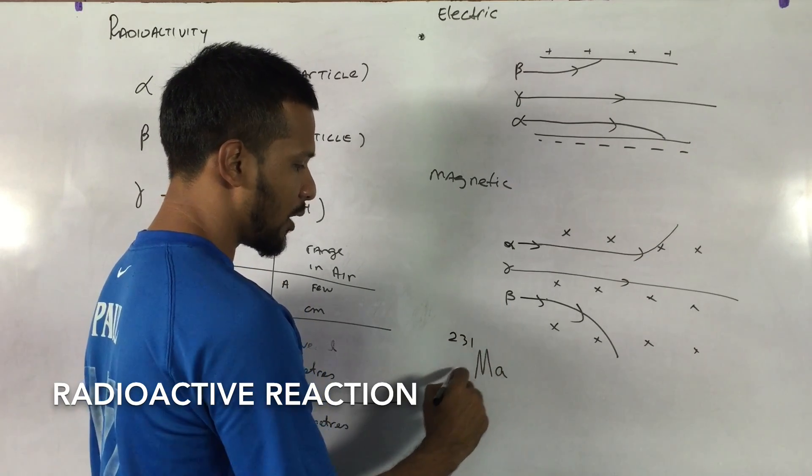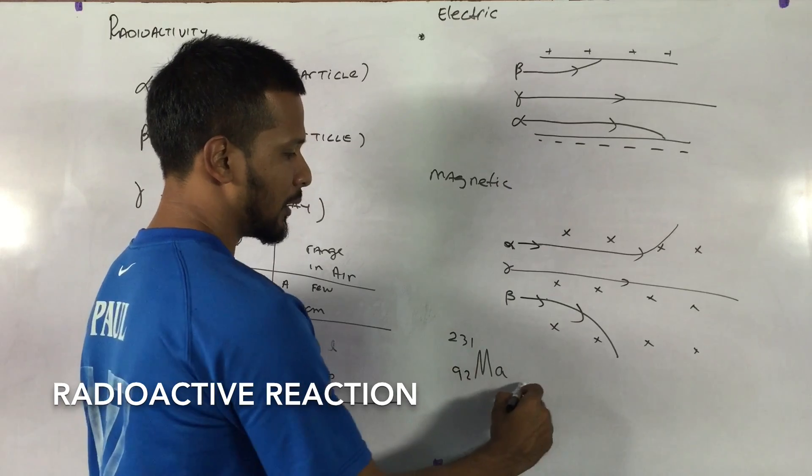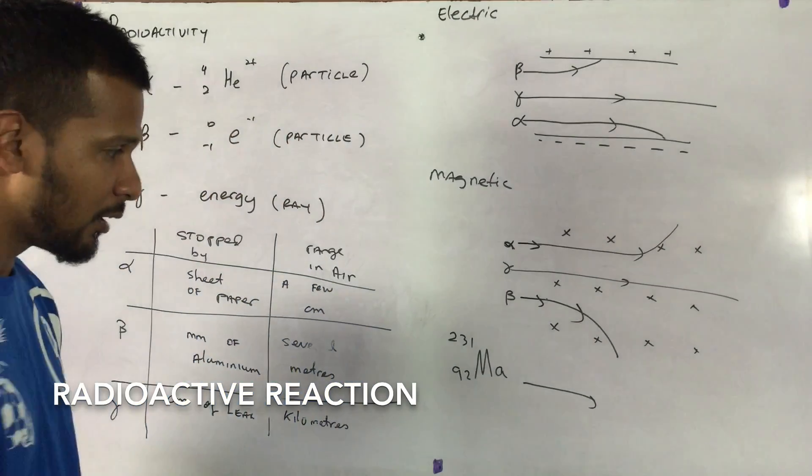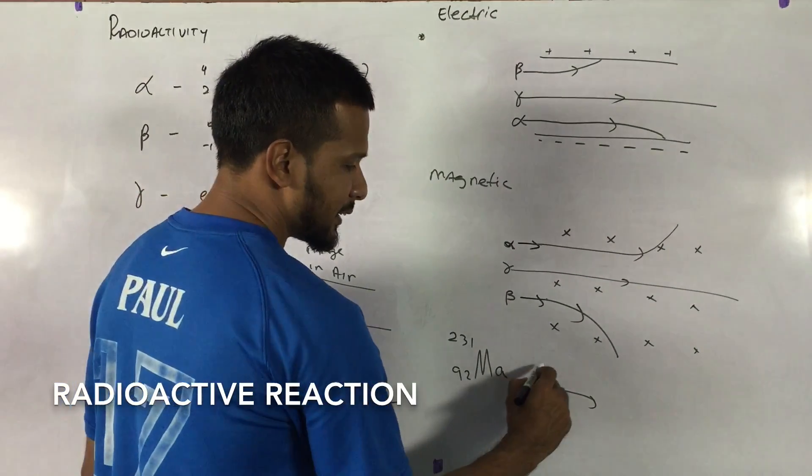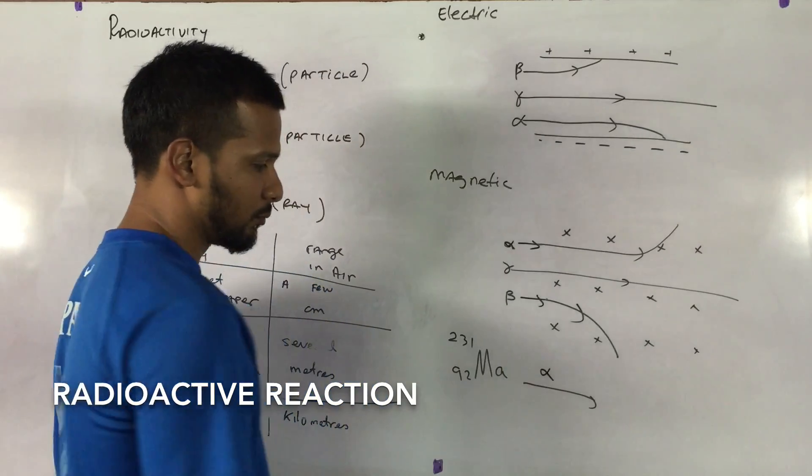Let's say this Madrid particle loses an alpha particle. What will happen?